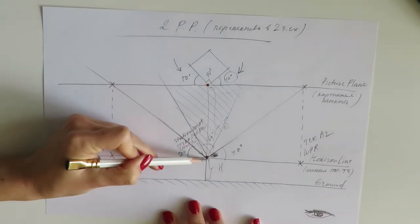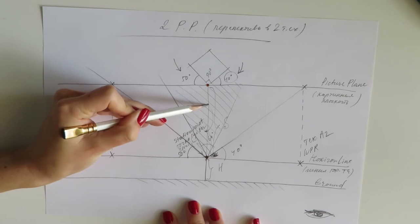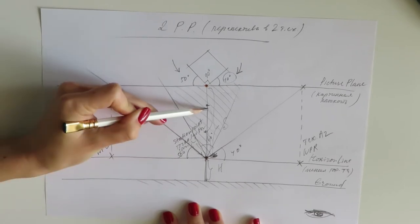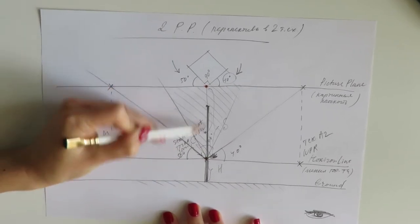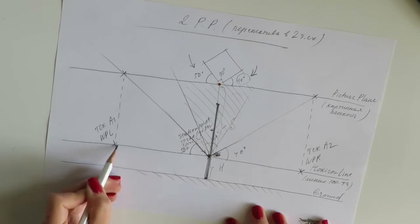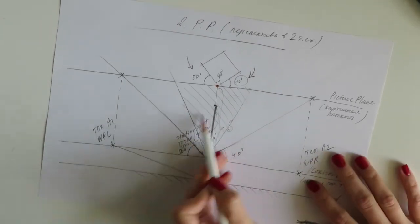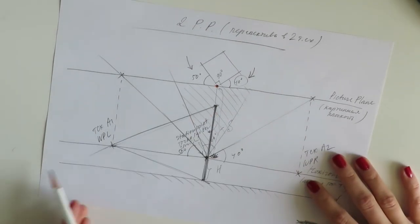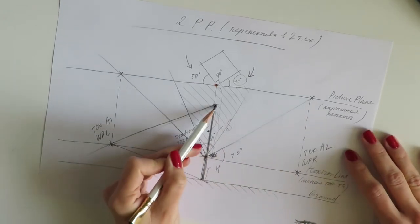Now let's measure the height of our building. Let's say it will be three times the height of our eye level, our horizon line. And now this line that you drew, to scale the top and the bottom, you can bring back to your vanishing points.